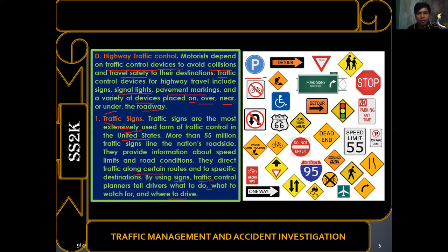Examples of traffic signs include parking area signs (informative), detour signs, yield signs (regulatory), pedestrian crossing signs, and stop signs (regulatory). These specific types of traffic signs will be discussed one by one in detail.